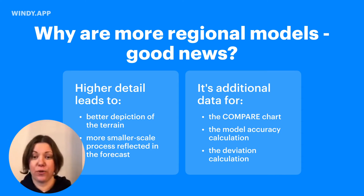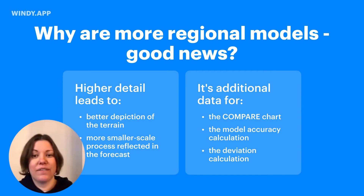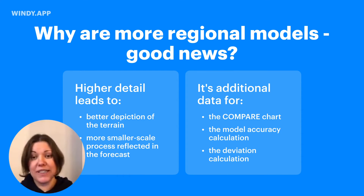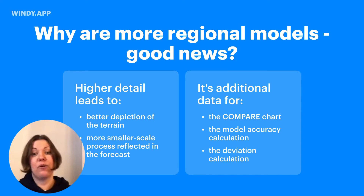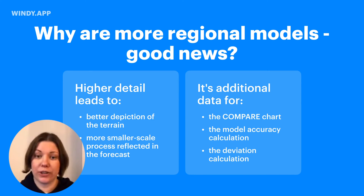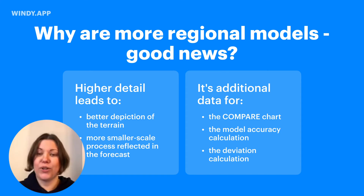Imagine you have a thunderstorm — maybe five to ten kilometers in diameter. If you have a weather model with 25 kilometers of spatial resolution, you will not be able to calculate what is going on in the thunderstorm because it's too small — it's inside the grid. But if your weather forecast is two kilometers, you can incorporate more physical processes in your forecast, making it more accurate. Also, the more models you have on each spot, the more data there is for a compare chart. If you have five models and two of them are regional, you can make a more informed decision by seeing where the models tend to agree. This would also be another source of data for calculating the model accuracy rating.